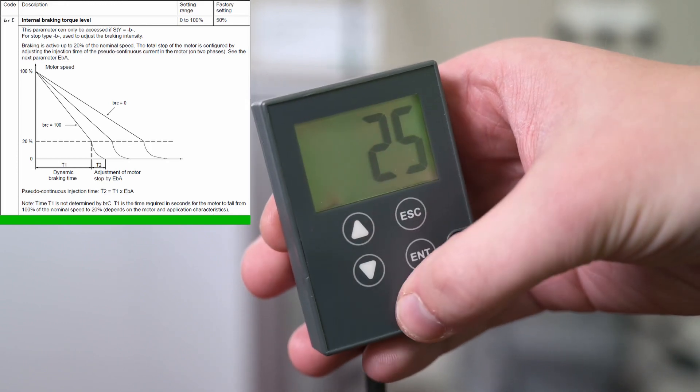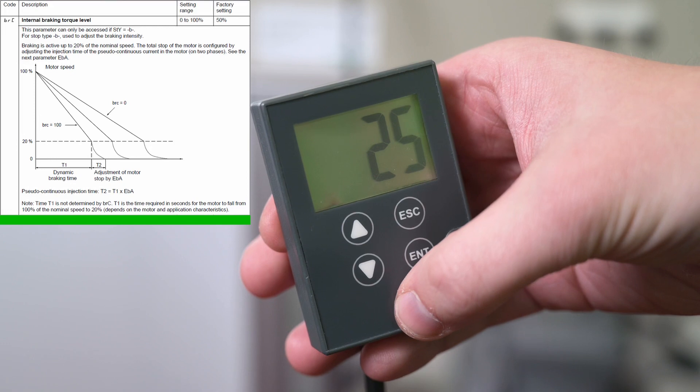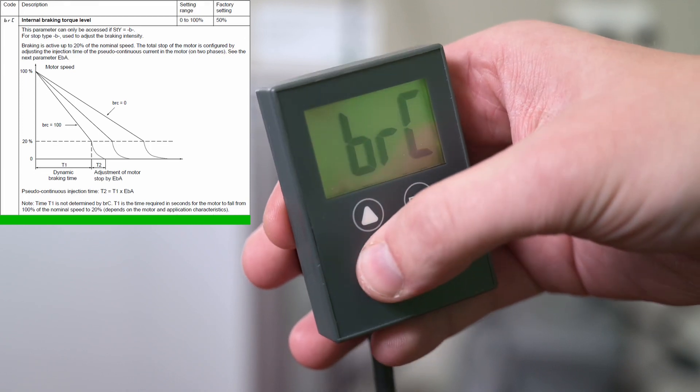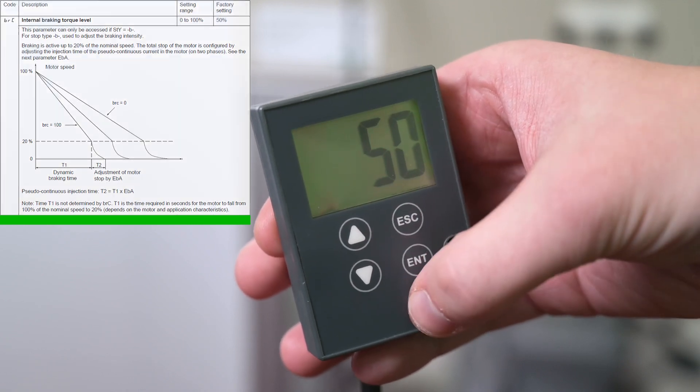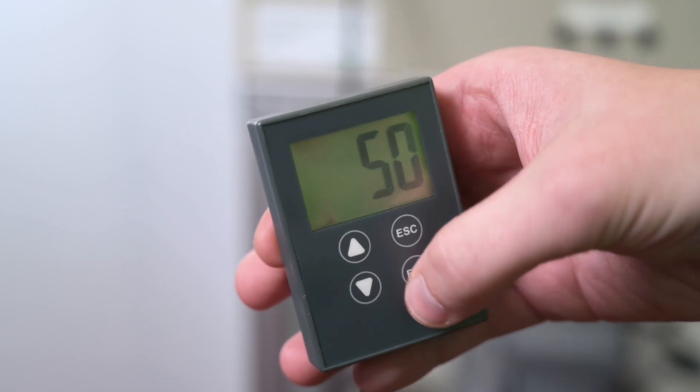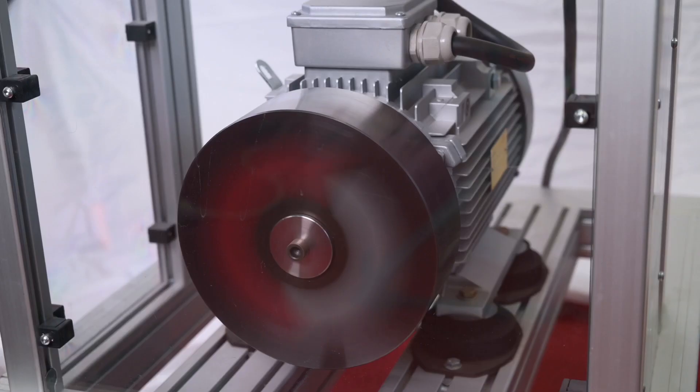First, we configure the parameter BRC, which defines until when the soft braking is active. The value is a percentage of the nominal speed. Now we configure EBA. This parameter allows us to adjust the current injection time. It will stop the motor. Here, you can see the motor slowing down at first and quickly stopping at the end.